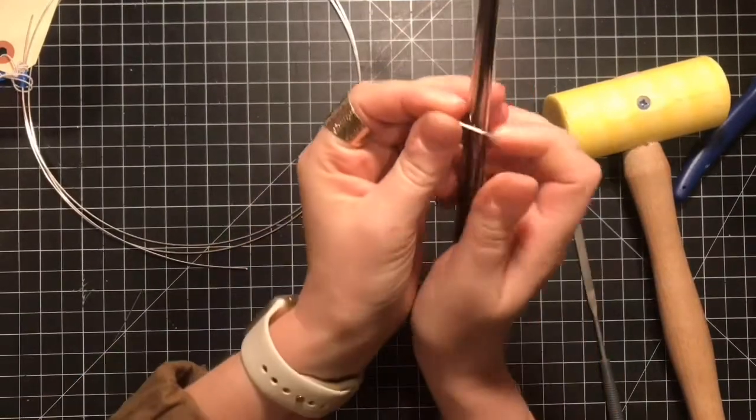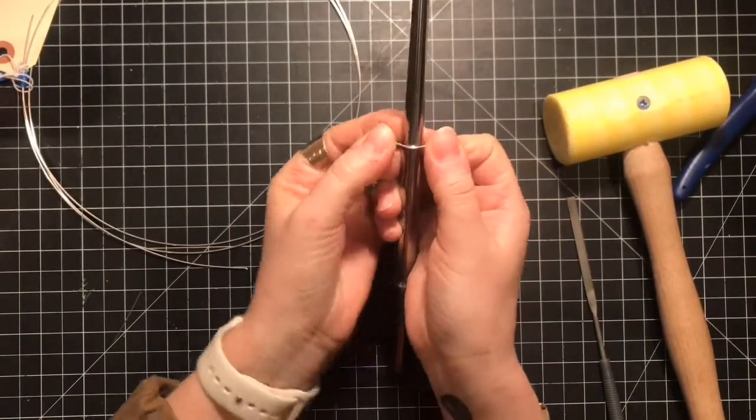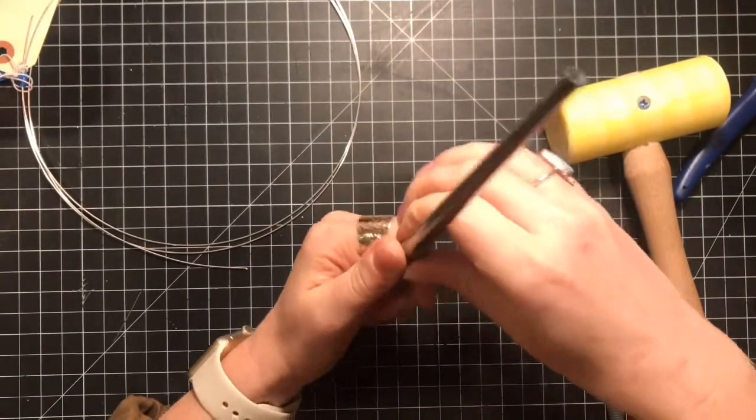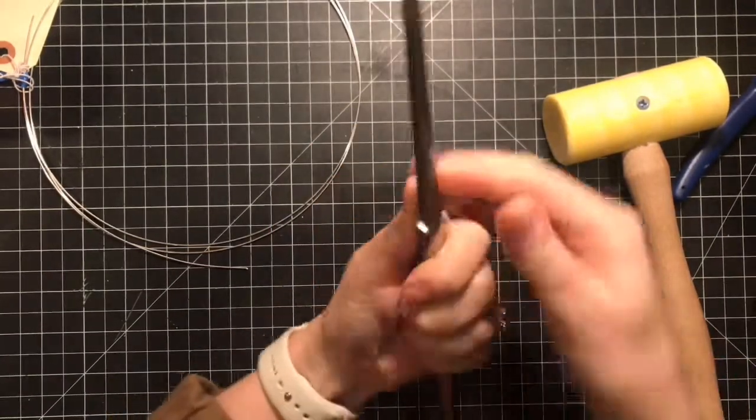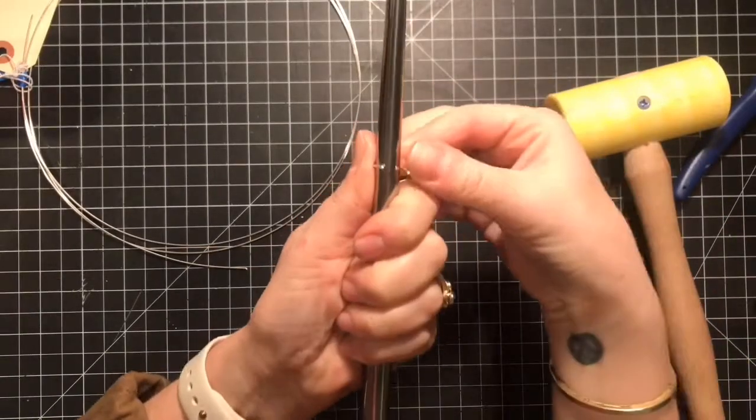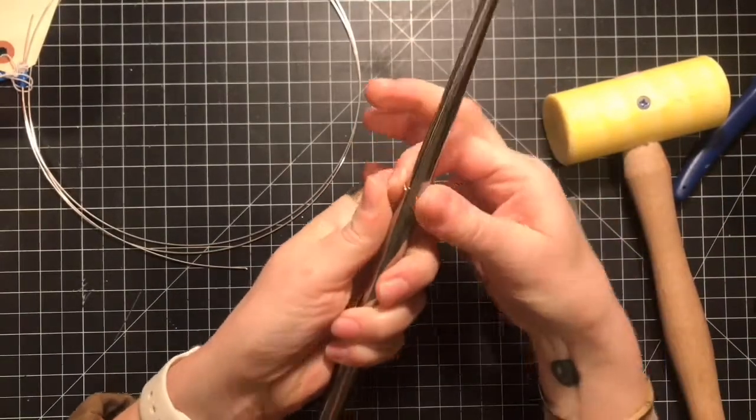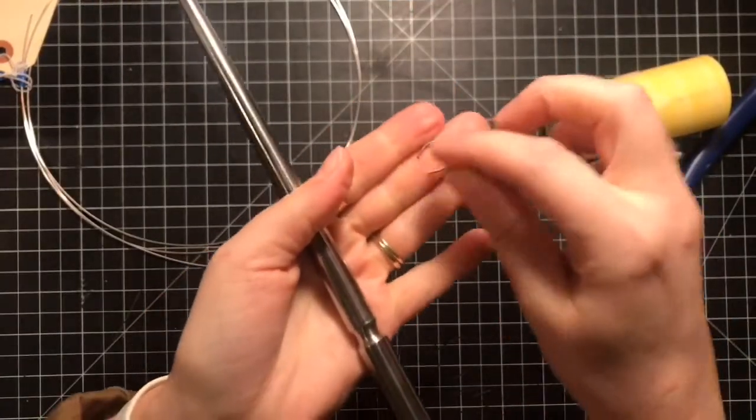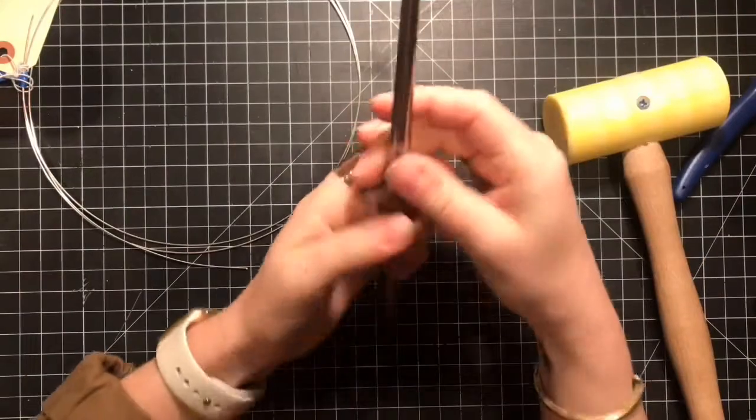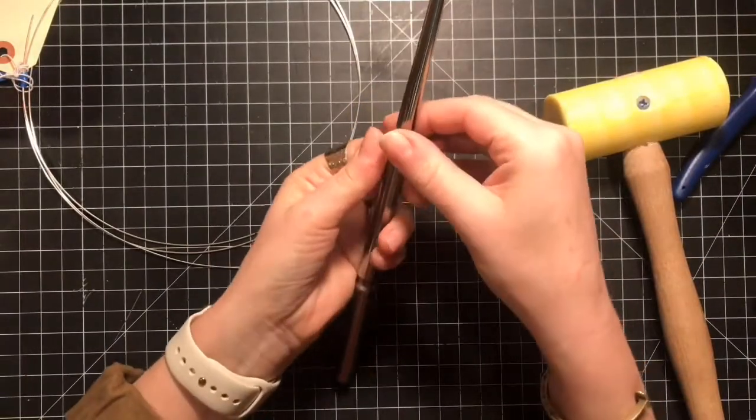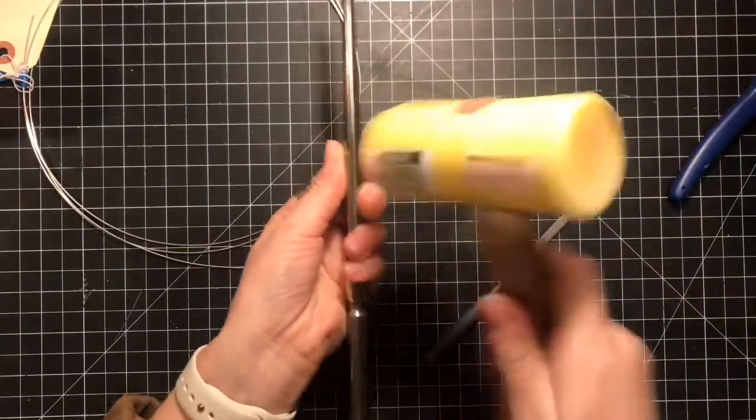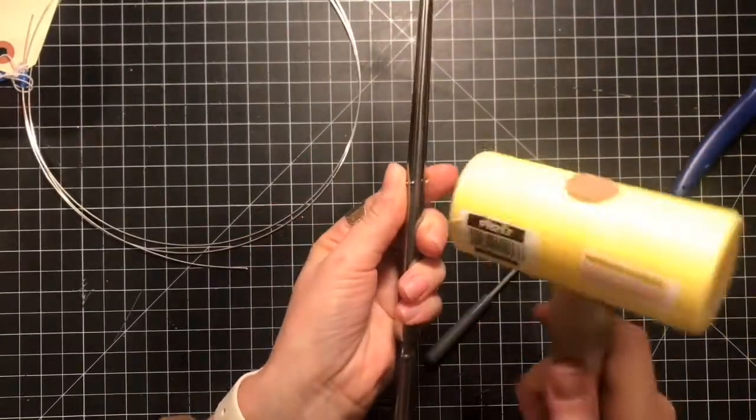All I'm gonna do is bend it around my bezel mandrel until I get it to be a perfect circle. It looks like this now but we're just gonna work until we get these ends to meet, and how we do that is by bending with our fingers and our pliers and using the mallet hammer to hammer these down.